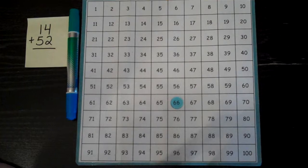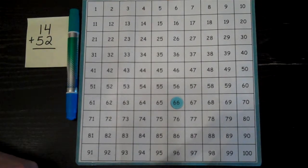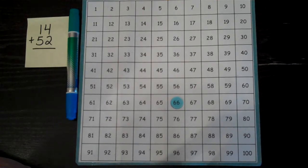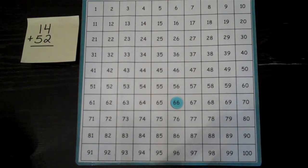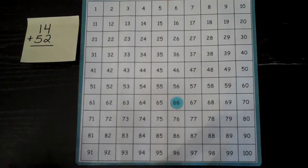A strategy is a way to accurately and relatively quickly come to a solution. So both of those strategies were accurate, they were correct, and they were both fairly quick. So either would work well for that question. The answer, no matter what strategy you use, is 66.